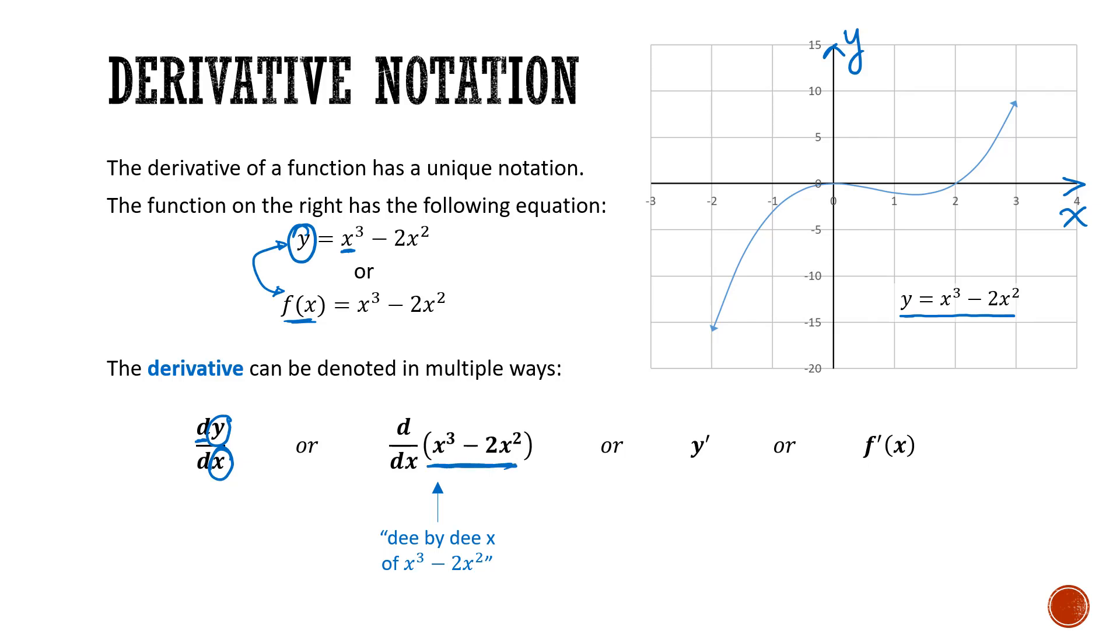Another way we might write this is y prime. So if you see this apostrophe sort of notation up here, we call that prime. And this is the first derivative as well.